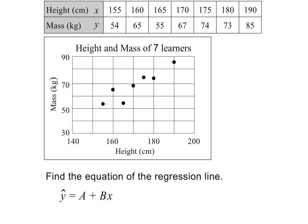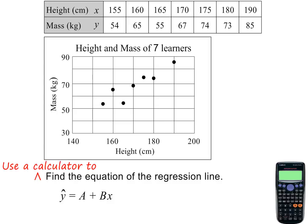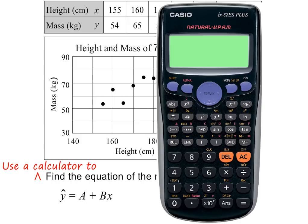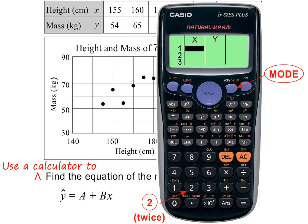From now on, we will use this equation with the capital A and B. Please note, we need to use a calculator to find the equation. The calculator we like to use is the Casio FX82ES+. To put the calculator into stats mode for regression, you need to press mode and then 2 twice. You will then see this on the calculator screen. If you have this Casio, please pause the lesson and do it before going on.